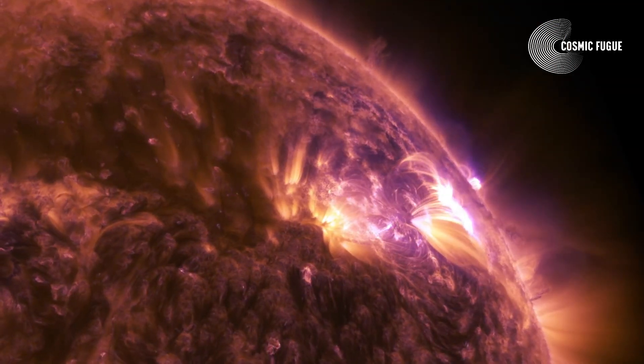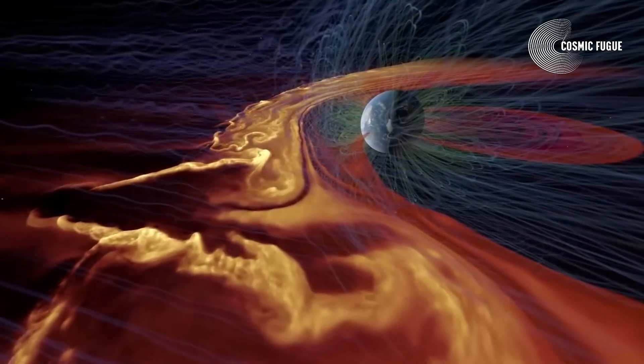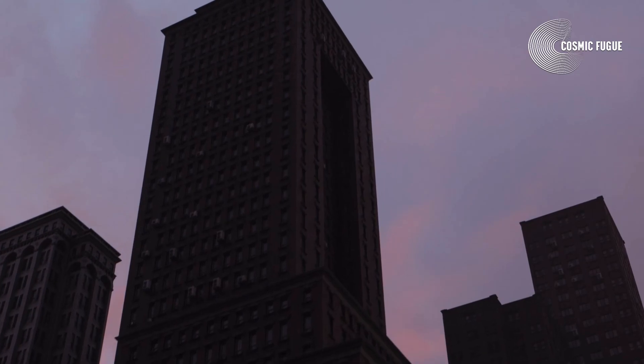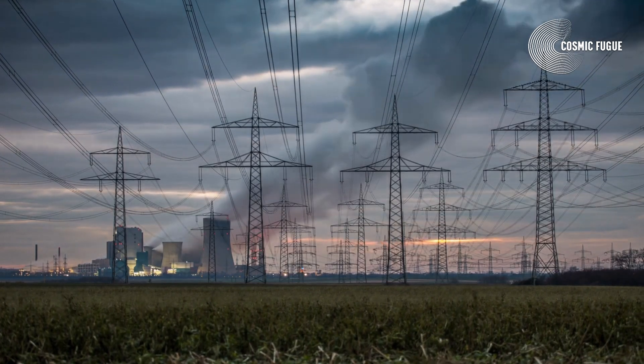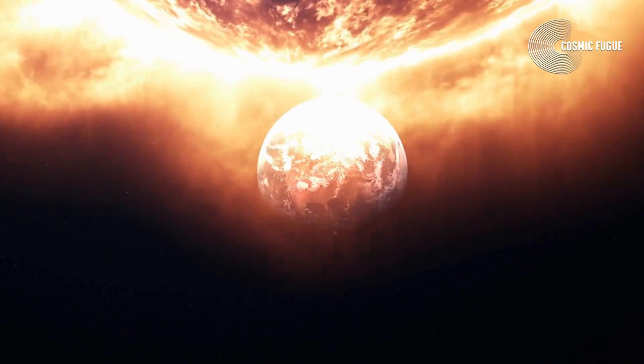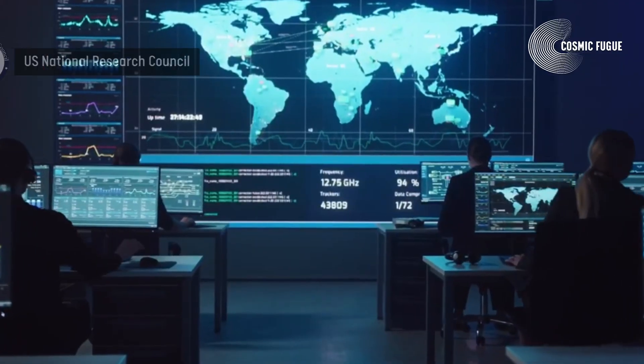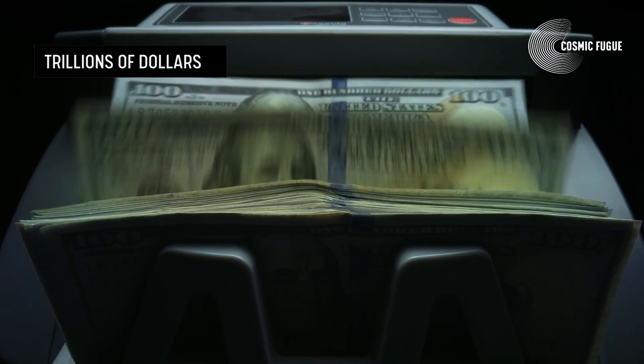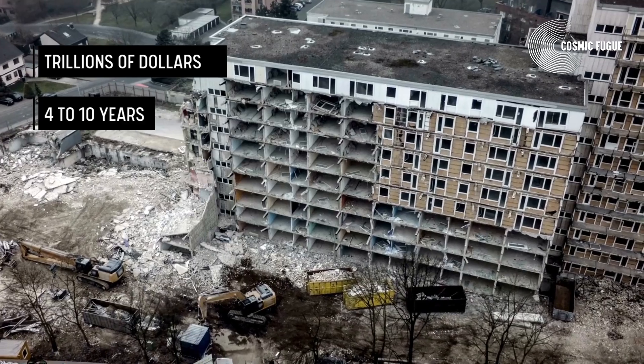A geomagnetic storm of this magnitude occurring today would cause widespread electrical disruption, blackouts, and damage due to extended outages of the electrical power grid. A major report on the impacts of a major solar storm by the U.S. National Research Council estimated the fallout from such an event at trillions of dollars and put the recovery time at 4 to 10 years.